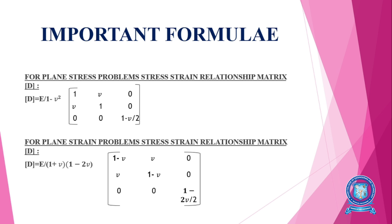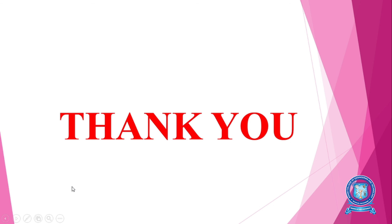The stress-strain relationship matrix D for plane stress problems is: D = E/(1 − ν²) × [1, ν, 0; ν, 1, 0; 0, 0, (1−ν)/2]. For plane strain problems, the D matrix is: D = E/((1+ν)(1−2ν)) × [1−ν, ν, 0; ν, 1−ν, 0; 0, 0, (1−2ν)/2]. The appropriate formula is selected based on whether the problem is plane stress or plane strain.